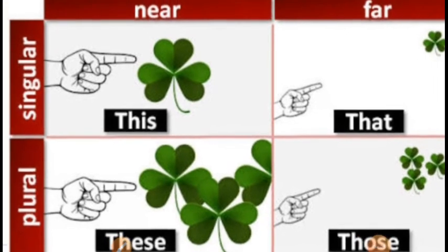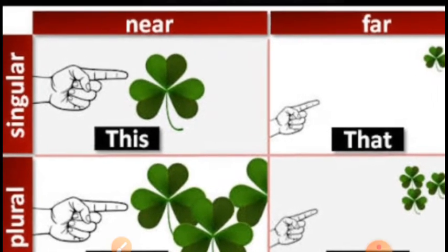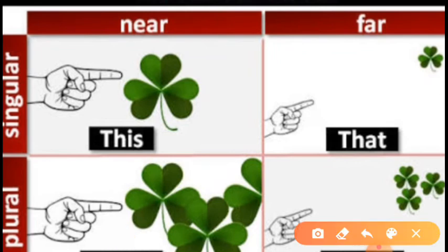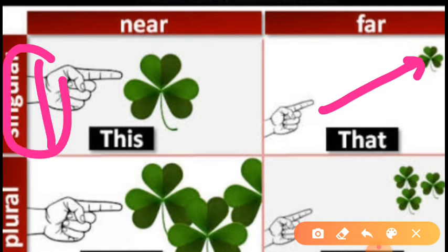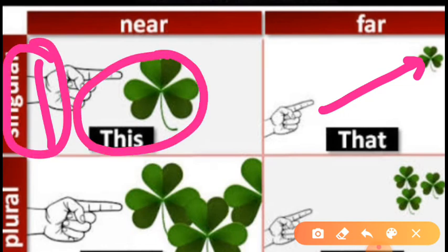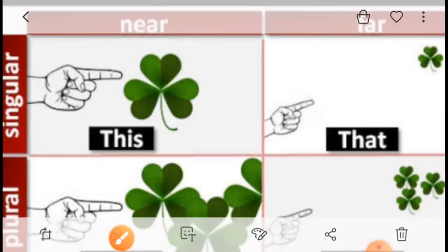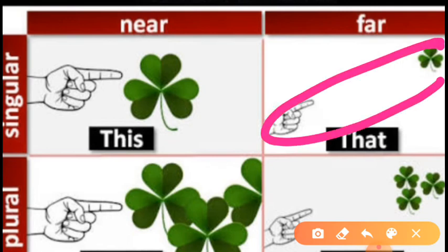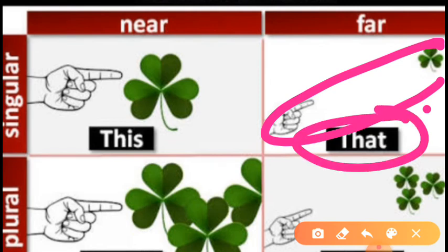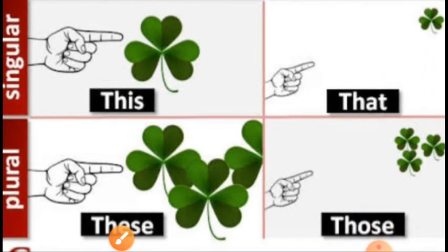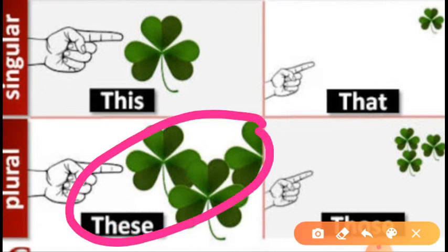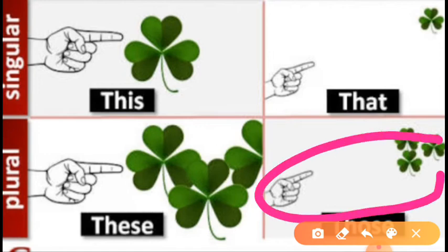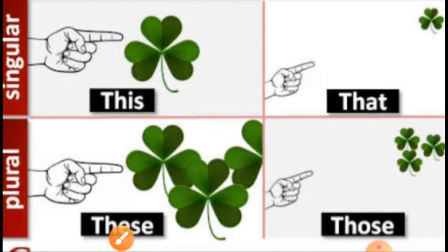To summarize: for the singular noun, if the thing is near to the speaker, we use 'this.' If the thing is far from the speaker, we use 'that.' For the plural form: if things are close to the speaker, we use 'these.' If things are far away from the speaker, we use 'those.'